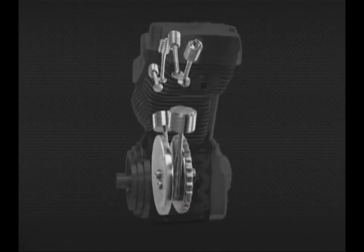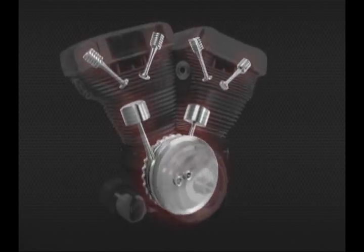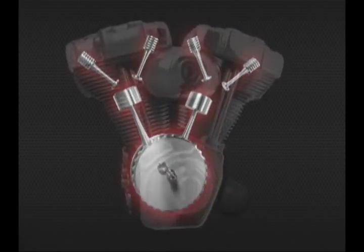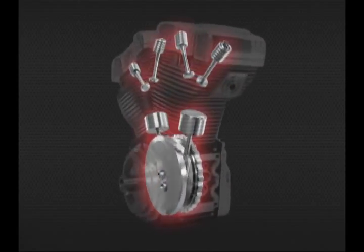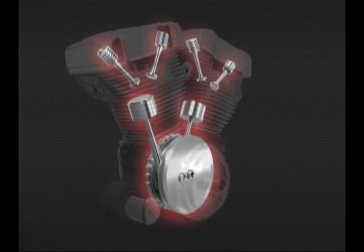Here's a cutaway view of a V-twin engine. As the bike starts to generate heat, Ultracool uses that generated heat to activate our 150 CFM fan by a thermal switch.